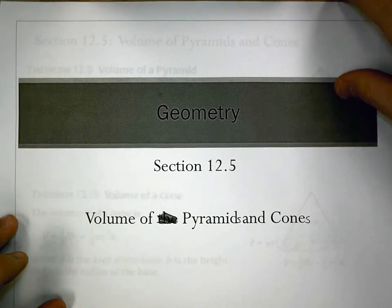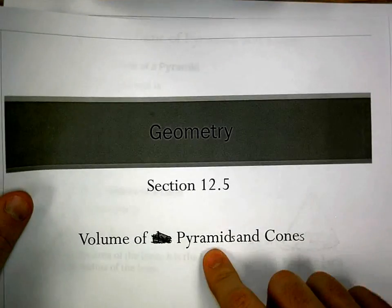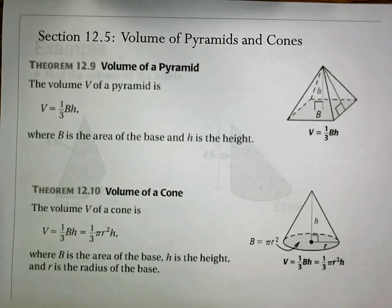Section 12.5 looks at volume of pyramids and cones. So, 12.5 volume of pyramids and cones, there we go, that sounds better.